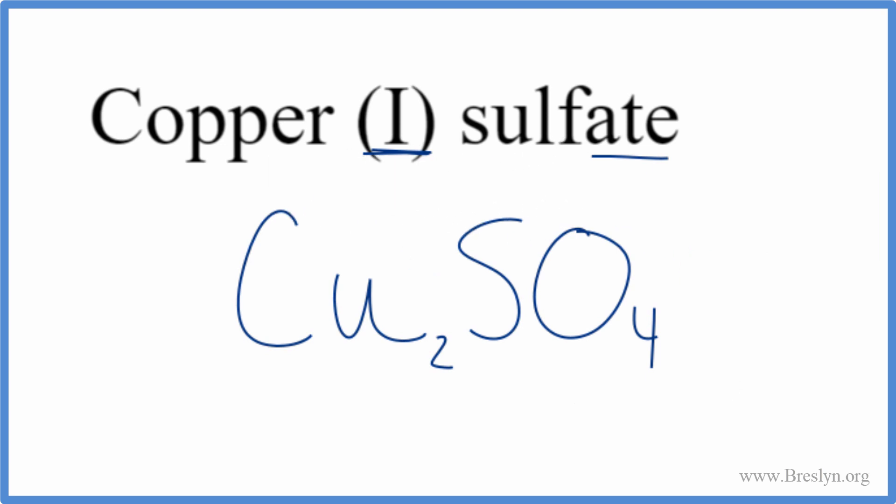But let's check our work, make sure we got that right. We said copper, because of the Roman numeral I, has a +1 ionic charge. The sulfate, we'd look that up, that was the 2 minus.